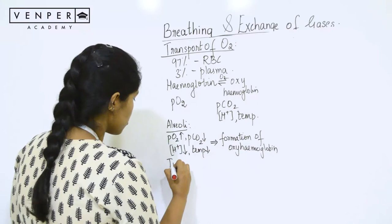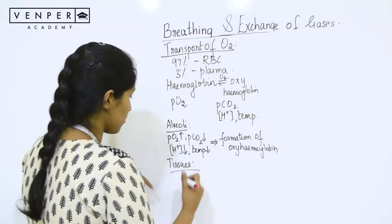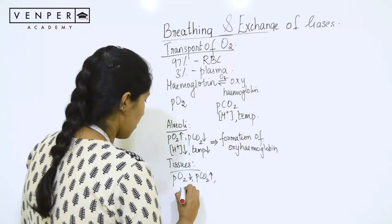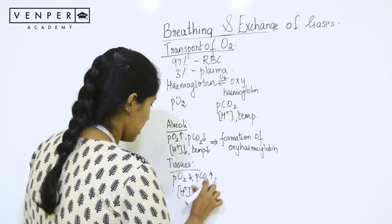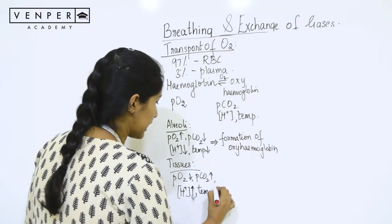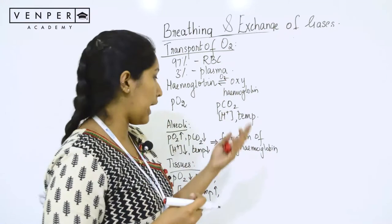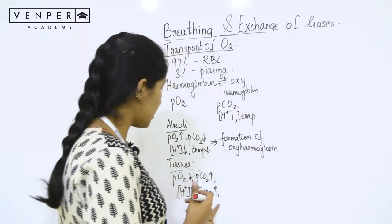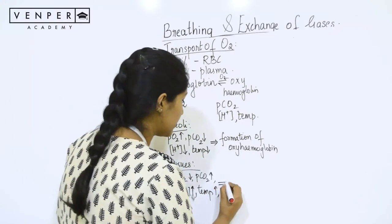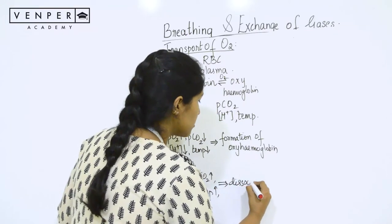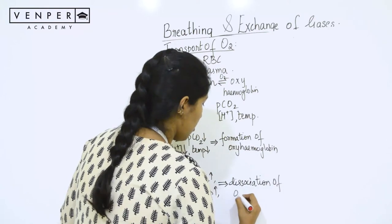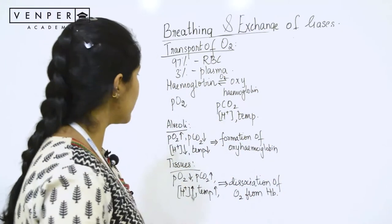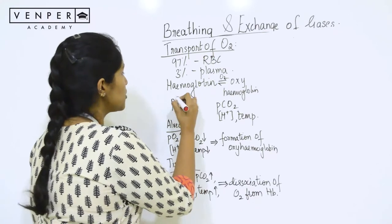When you look at the tissues, the situation is reverse: partial pressure of oxygen decreases, partial pressure of carbon dioxide is high, hydrogen ion concentration is high, and the temperature is higher compared to the air entering the lungs. These conditions favour the dissociation of oxygen from hemoglobin. Overall, it is mainly the partial pressure of oxygen that drives these processes.